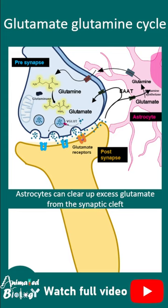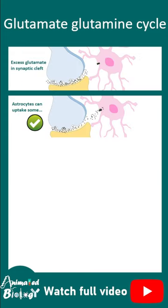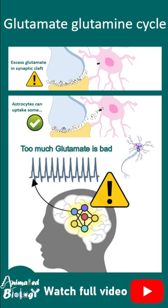This is how the astrocyte clears up excess glutamate from the synapse and prevents the risk of excitotoxicity. Too much glutamate is bad for the brain and might lead to epilepsy. That's why the astrocyte is important.